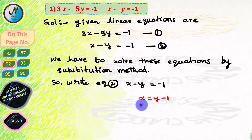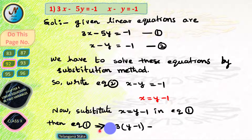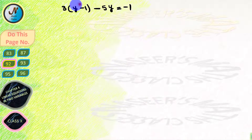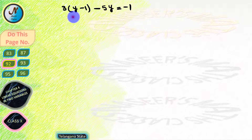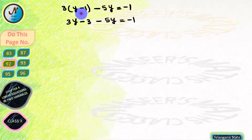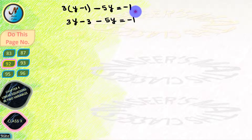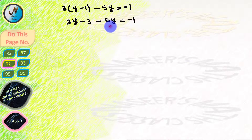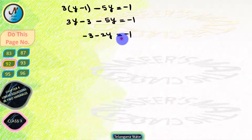To solve by substitution method, we write equation 2 as x equals y minus 1. We substitute x equals y minus 1 in equation 1. Then equation 1 becomes: 3 into (y minus 1) minus 5y equals minus 1. By the distributive law, 3 into (y minus 1) is 3y minus 3, giving us 3y minus 3 minus 5y equals minus 1. Since 3y and minus 5y are similar terms, we subtract to get minus 2y, so the equation becomes minus 2y minus 3 equals minus 1.